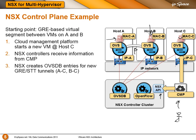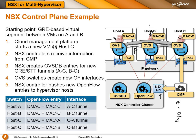The first thing that happens is OVSDB pushes out information that we need a new tunnel, and these two tunnels are created on all three hosts. Now that we have the new logical interfaces, we can push OpenFlow entries from the OpenFlow controller to all three hypervisors. The entries would be something simple like: on host A, if the destination address is MAC C, then use the A-to-C tunnel, and so on.